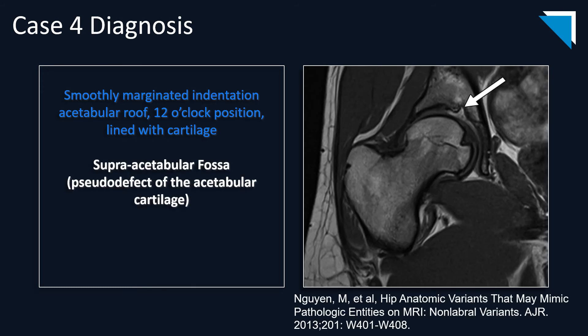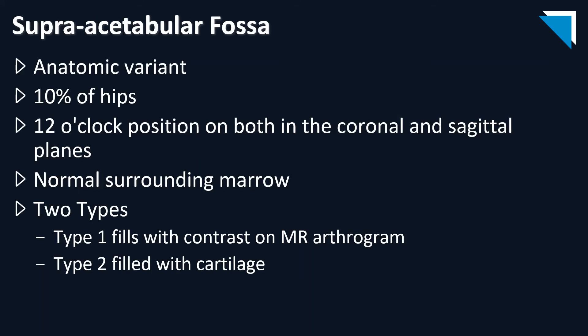The diagnosis is a normal anatomic variant that can mimic pathological etiologies. This is called a supra-acetabular fossa, otherwise known as a pseudo-defect of the acetabular cartilage. It is smoothly marginated in the acetabular roof at the 12 o'clock position, lined with cartilage. It is present in 10% of hips and should be seen at the 12 o'clock position in both coronal and sagittal planes. There are two types: one that fills with contrast and one filled with cartilage.